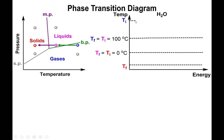Starting at T_initial, since we want to decrease the temperature toward T_final, we go down along a diagonal until we hit the boiling point. This first segment uses q = mcΔT, and since this segment is above the boiling point, the heat capacity used must be the heat capacity of the gas.